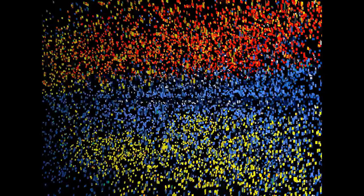As we go down the periodic table, more orbitals are added, and this makes the atomic radius larger — that one's kind of obvious. One orbital is not as big as two, and a third orbital is even bigger. This increased distance makes both the ionization energy and electronegativity less. As the electrons get farther and farther away from the nucleus — remember it's the positive protons in the nucleus that are holding them in — it's easier to pull the electrons away, so ionization energy goes down, and they have less ability to pull in electrons because there are more orbitals blocking other electrons from coming in.